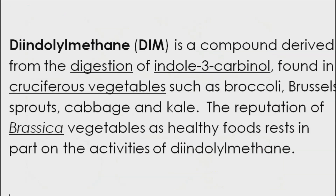DIM is a phytonutrient — a plant nutrient — found in cruciferous vegetables. These include cabbage, broccoli, bok choy, Brussels sprouts, cauliflower, kale, kohlrabi, mustard, rutabaga, and turnip. These plants have been cultivated for thousands of years and were initially used for their medicinal benefits.